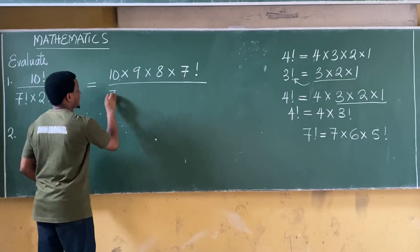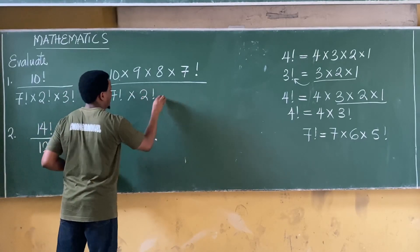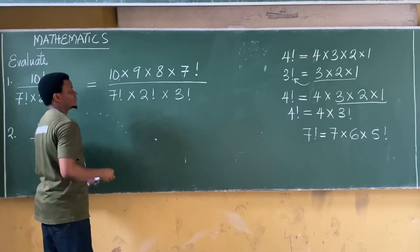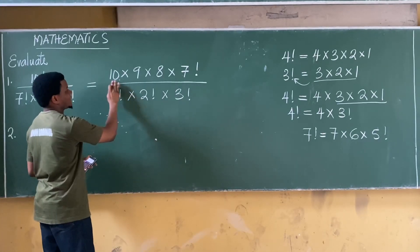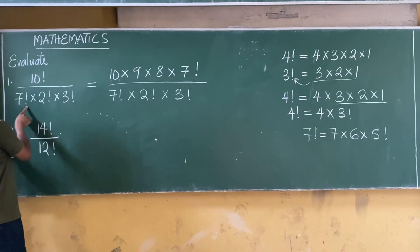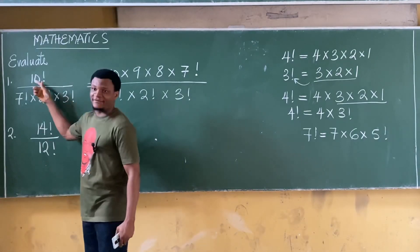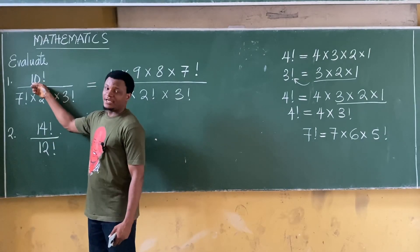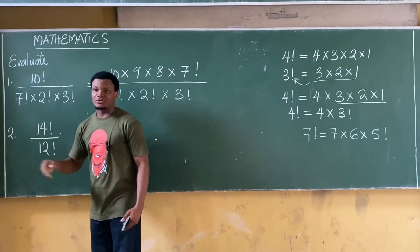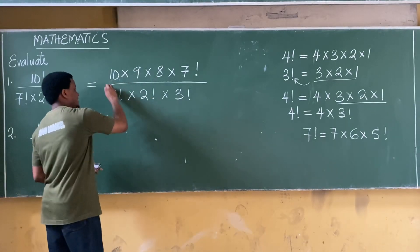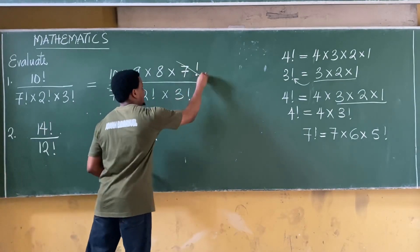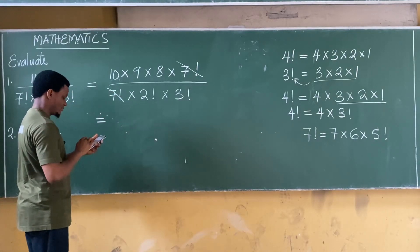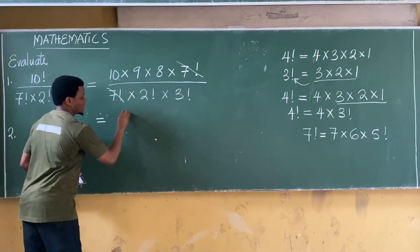This now becomes all over 7 factorial multiplied by 2 factorial multiplied by 3 factorial. The reason we do this is so that we've expressed the greater factorial in terms of a lesser one. I'm expressing 10 factorial in terms of 7 factorial so that they can cancel out. The 7 factorial cancels with 7 factorial, and I'm left with 10 times 9 times 8.